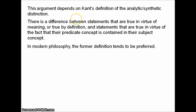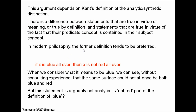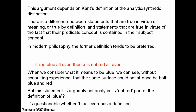A more persuasive example: if X is blue all over, then X is not red all over. On the one hand, this seems to be a priori — when we consider what it means to be blue, we can see, without consulting experience, that the same surface could not at once be both blue and red. But arguably, this statement is not analytic. Is 'not red' part of the definition of blue? In fact, it's questionable whether 'blue' even has a definition — there's a classic problem of explaining or defining a colour beyond simply pointing to it. So arguably this is synthetic, but a priori.